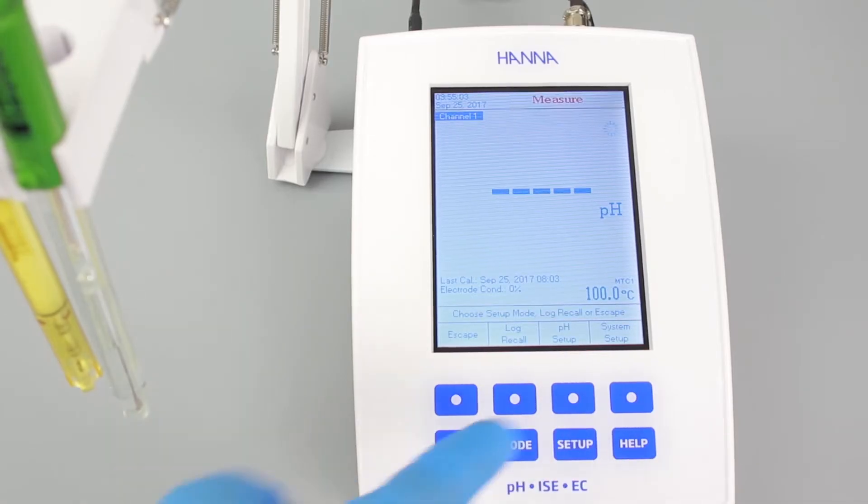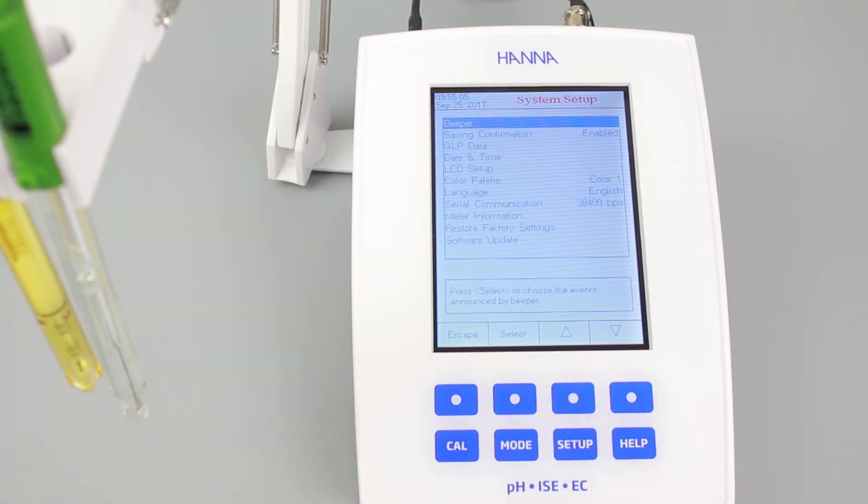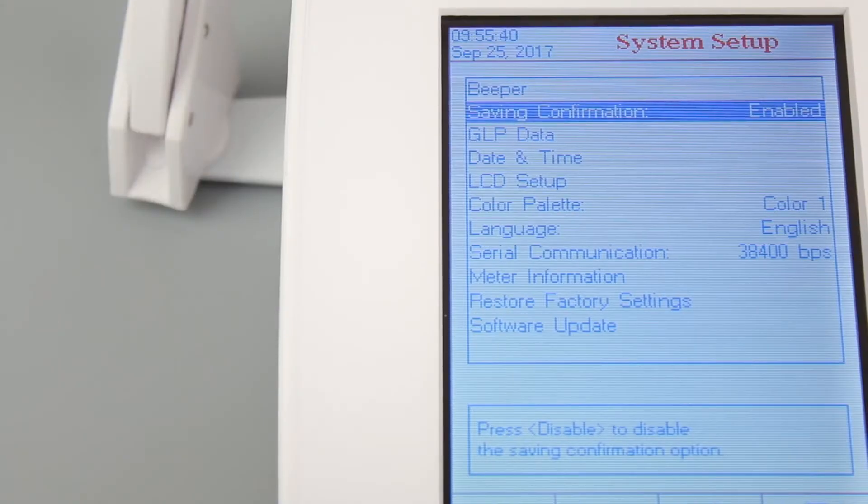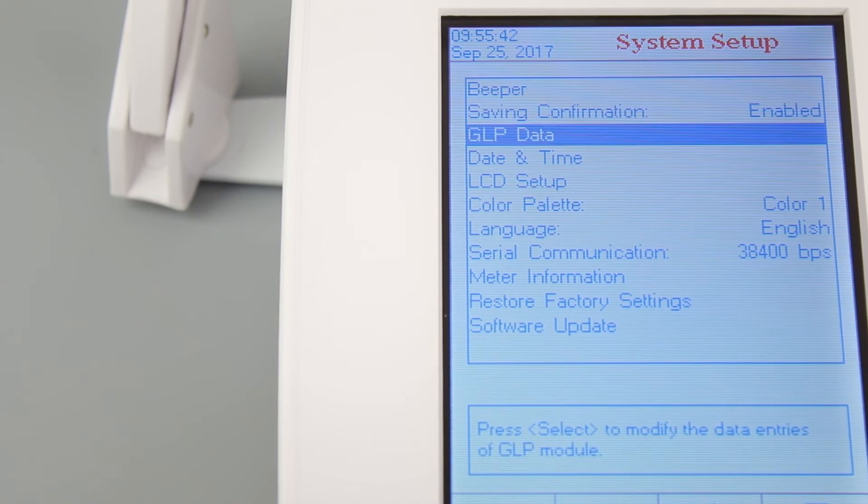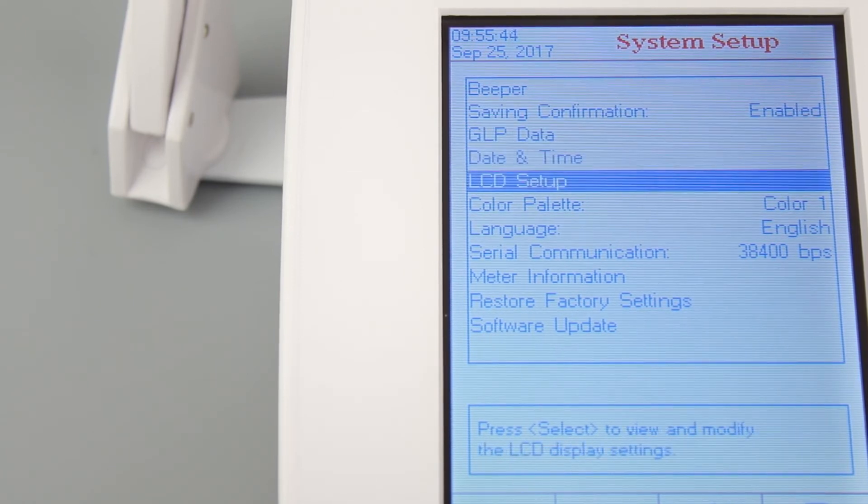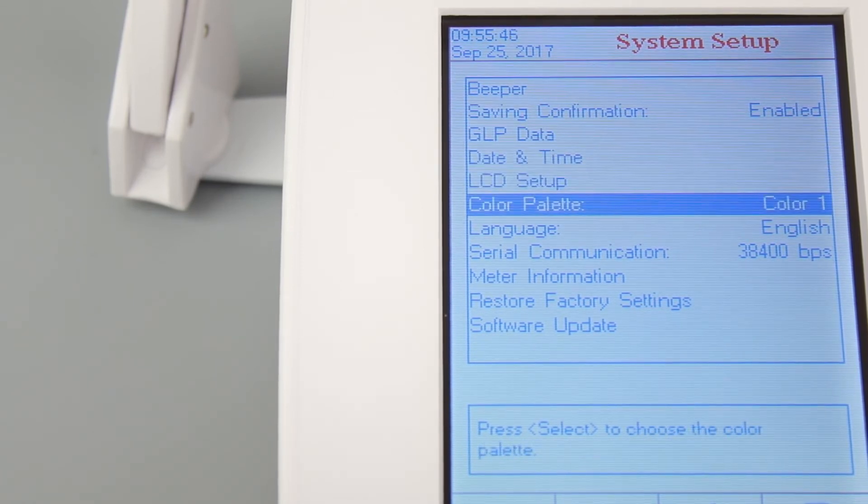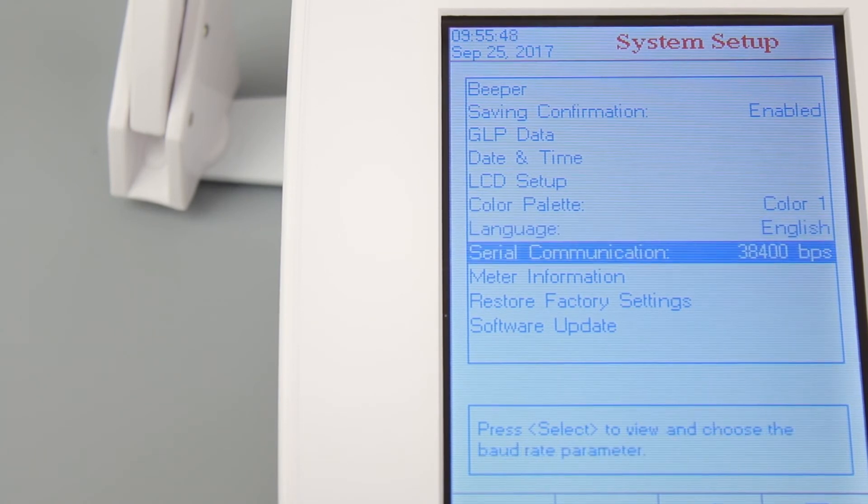Once the meter is on, you'll find that there are many different options to choose from. We recommend starting with the system setup. Press the setup button and then system setup. This area of the menu lets you set the date and time, GLP data, and LCD settings. You can also view information about your meter and other operational preferences that you can set to your liking.